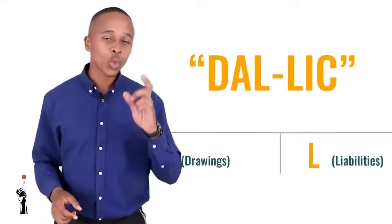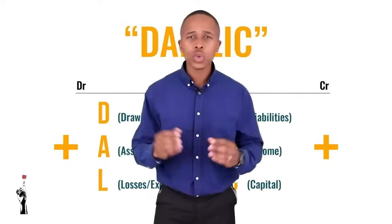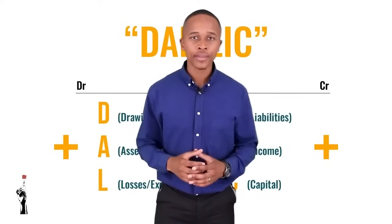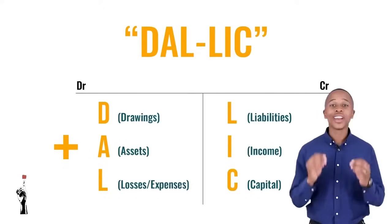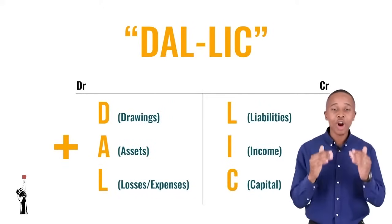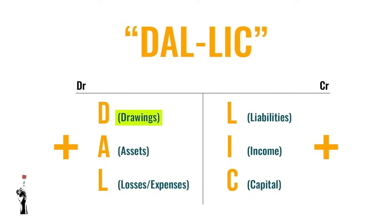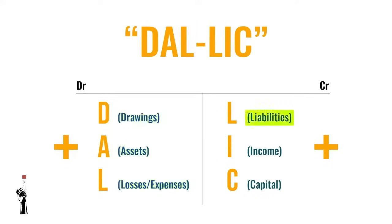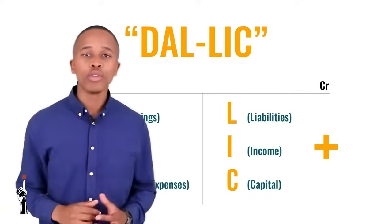Can you still remember the acronym DALEK? This is the acronym we'll be using to identify which side the accounts will be decreasing and increasing — whether on the debit or the credit side. This is very very important; this is the fundamental of our lesson today. Drawings, Assets, Expenses or Losses increase on the debit side and decrease on the credit side, whereas Liabilities, Income, and Capital increase on the credit side and decrease on the debit side. If you're watching this on YouTube, I recommend you pause, memorize this, and then move on.